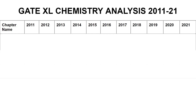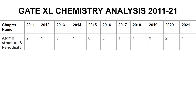So without much further ado, let's get right into it. In chapter number one, we have Atomic Structure and Periodicity. The weightage from 2011 to 2021 is as follows. In the year 2011, we had questions worth two marks. I have clubbed both questions asked for one mark and two marks and given the total marks. So some questions are asked for one mark and some for two marks.